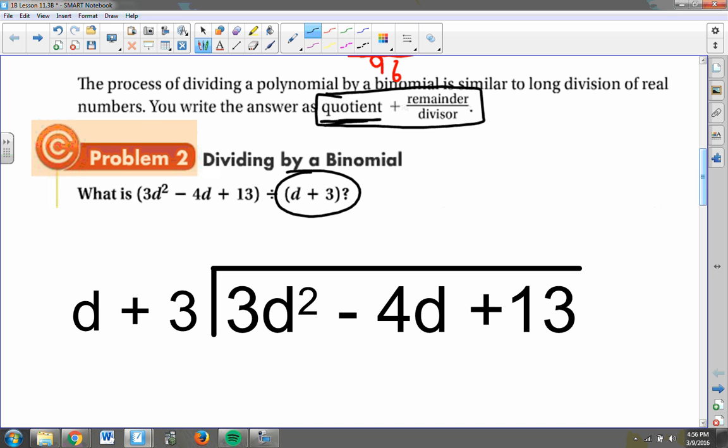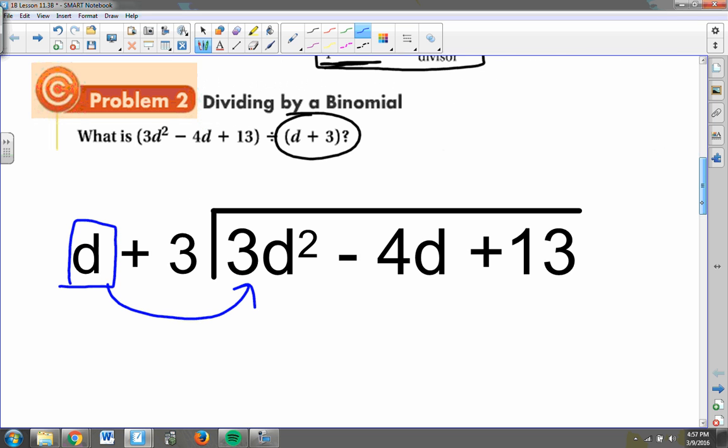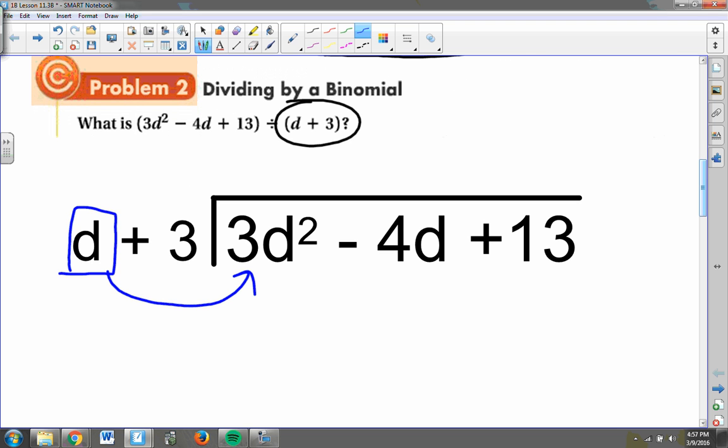If I were to divide 3d squared minus 4d plus 13 by d plus 3, the first thing that I do is I look to see how many times does this term go into that term. So d times what will give me the 3d squared? And the answer is 3d, because d times 3d is 3d to the second power. So that's the first term of my answer.